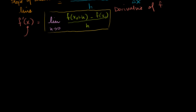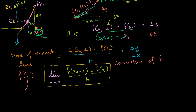In the last video, we tried to figure out the slope of a curve at a certain point. We found the slope between that point and another point not too far away — the slope of the secant line. This is just the change in y divided by the change in x, where h was the difference between our two x values. We then asked: what if we take the limit as that second point gets closer and closer to the first? The slope approaches the slope of the tangent line, and we defined that as the derivative of our function.